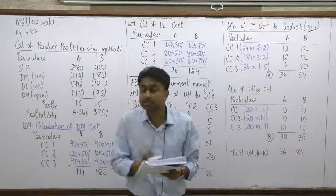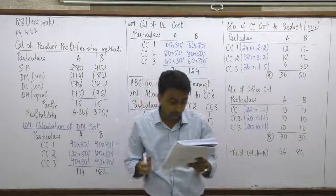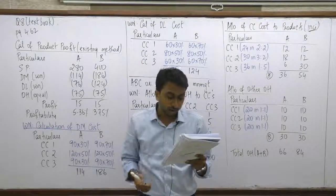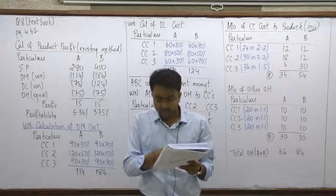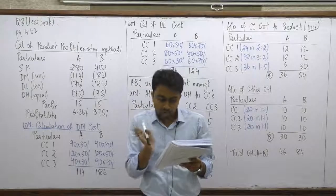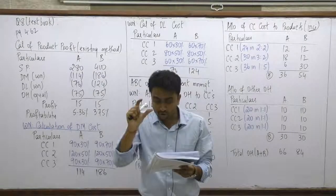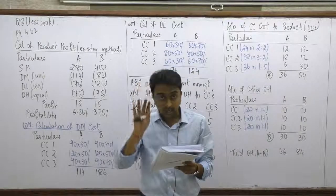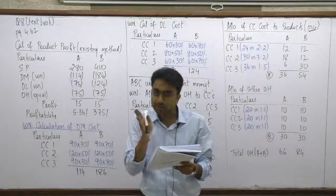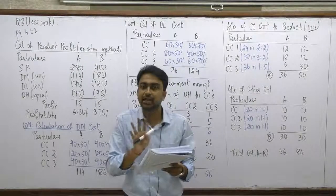To interpret that table correctly: the cost center costs are allocated to Grade A and Grade B by those percentages. So the direct material cost of Cost Center 1 (₹90) is allocated 30% to Grade A and 70% to Grade B. That is how to read the allocation table.